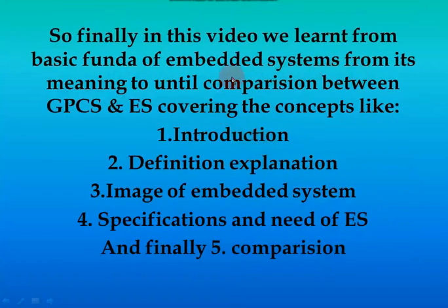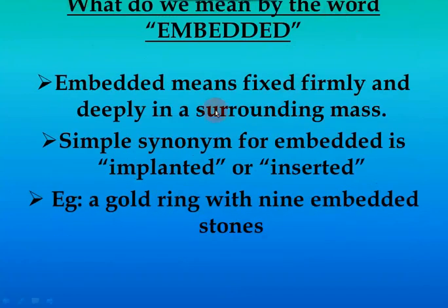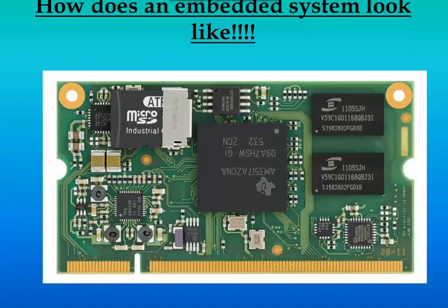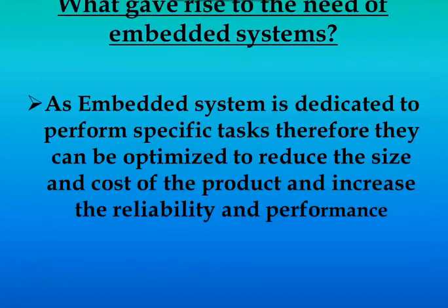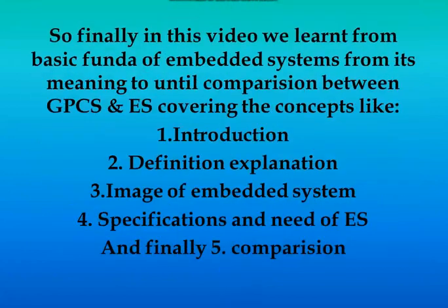Finally, in this video we learned the basic fundamentals of an embedded system — from its meaning to the comparison between general purpose computing systems and embedded systems. We covered: the meaning of the word embedded (implanted/inserted), the definition of an embedded system, the hardware-software combination for embedded systems, specifications of an embedded system, the picture of how an embedded system looks, the circumstances that gave rise to the need for embedded systems, common terms used in embedded systems, and seven points of difference between GPCS and embedded systems.